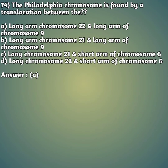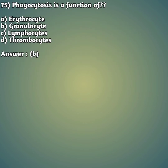Moving to our 74th question: the Philadelphia chromosome is formed by a translocation between - option A: long arm of chromosome 22 and long arm of chromosome 9. Option B: long arm of chromosome 21 and long arm of chromosome 9. Option C: long arm of chromosome 21 and short arm of chromosome 6. Option D: long arm of chromosome 22 and short arm of chromosome 6. The right answer is option A - the Philadelphia chromosome is formed by translocation between the long arm of chromosome 22 and the long arm of chromosome 9.